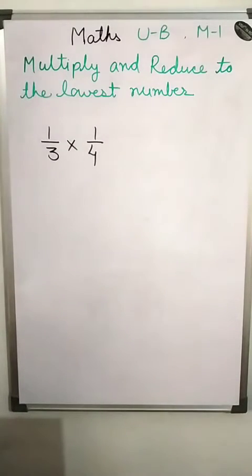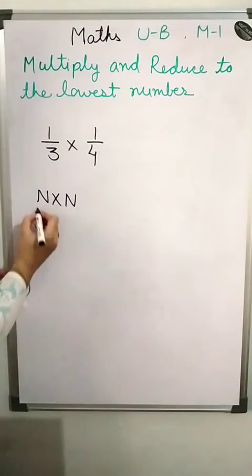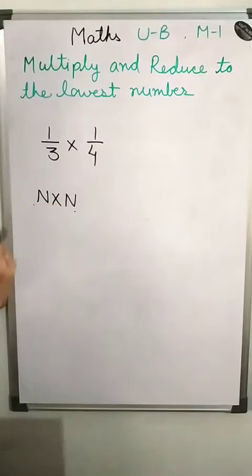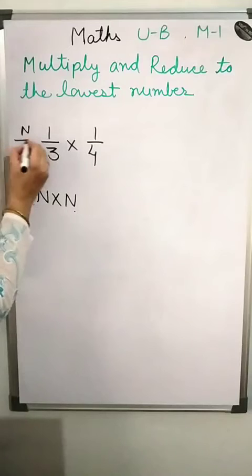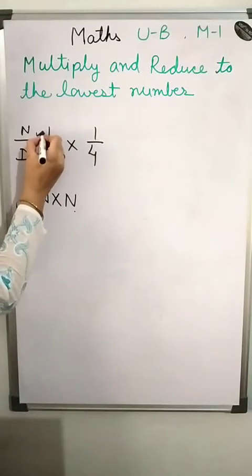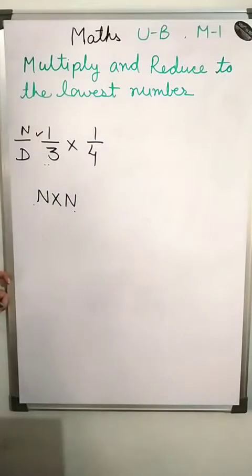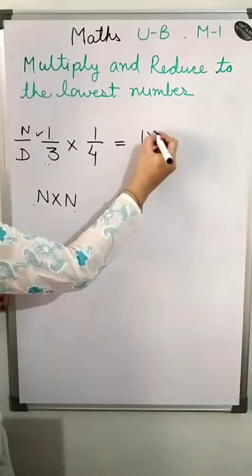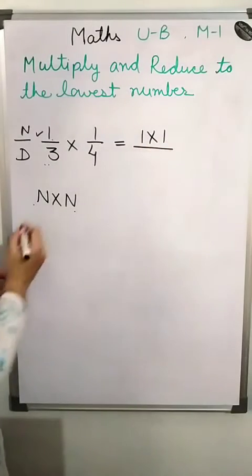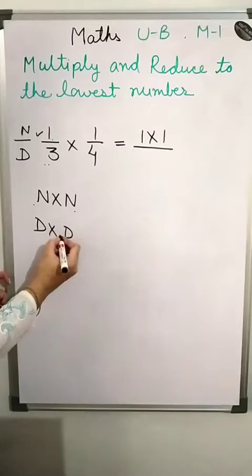How do we solve this? First we multiply numerator to numerator. The top number is called the numerator and the bottom number is called the denominator. So we multiply numerator to numerator, then we multiply denominator to denominator.